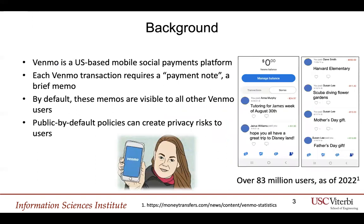Background. Venmo is a US-based mobile social payments platform. Each Venmo transaction requires a payment note, which is a brief memo. By default, these memos are visible to all other Venmo users, and public-by-default policies can create privacy risks to users. Looking at the notes on the right side, a user has a child called James, they went to Disneyland, James goes to Harvard Elementary School, the user has a sister Susan with whom they split the cost of their parents' gifts, and also went to Flower Garden for scuba diving. The intuition here is that users may not make a conscious choice to share such information publicly, but are inadvertently doing so by inertia, because the platform makes everything public by default.